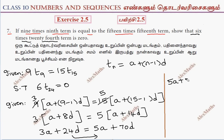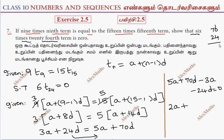Subtracting: 5a plus 70d minus 3a minus 24d equals 0, giving us 2a plus 46d equals 0.